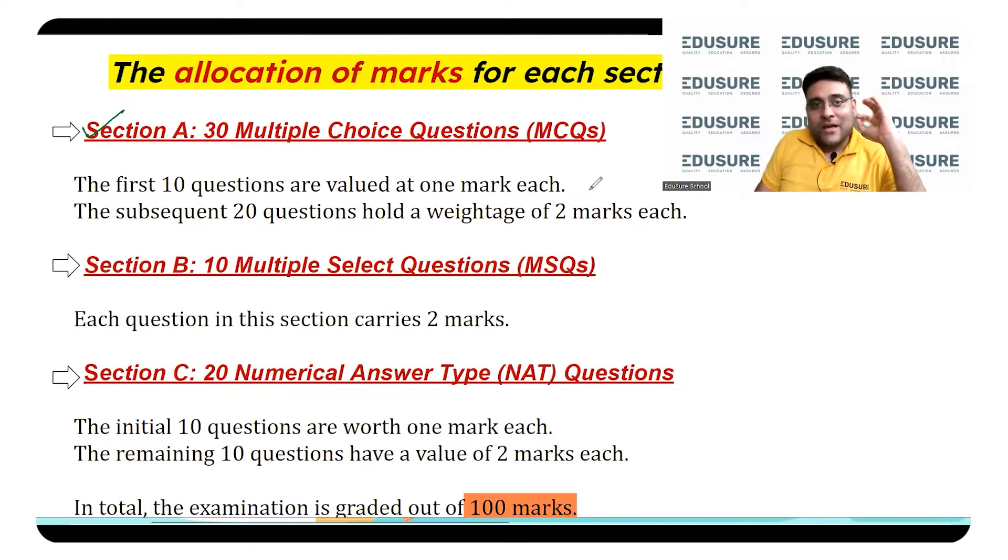Section A is 50 marks. MCQ - first 10 questions, one mark each. Next 20 questions, two marks each. 50 marks, Section A.